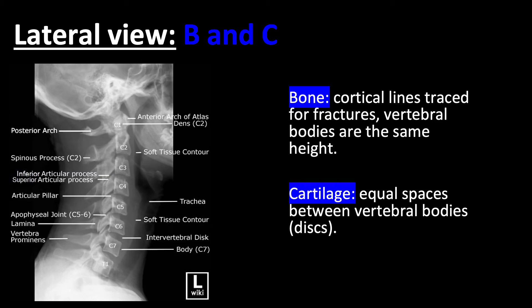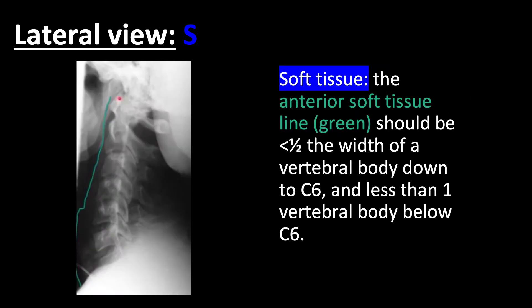For bone, we would trace the cortical lines to look for any fractures or compression, and the vertebral bodies must be the same height. For cartilage, although the intervertebral discs cannot be seen on the X-ray, we would expect equal spaces between all the vertebral bodies. Pre-vertebral soft tissue widening can be seen with some fractures from edema or a hematoma, and accompanying symptoms include dysphagia and/or dyspnea. However, the absence of these symptoms, as well as the absence of soft tissue widening, do not exclude the possibility of a C-spine fracture.